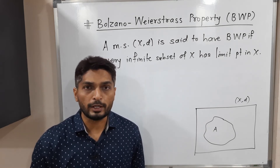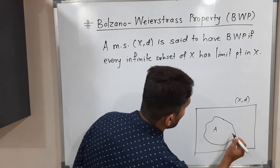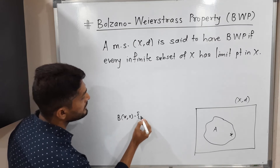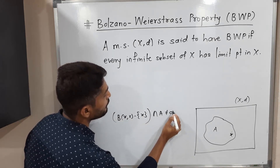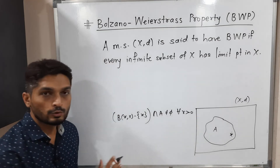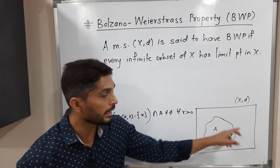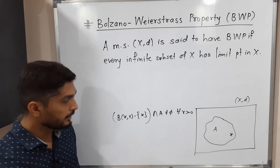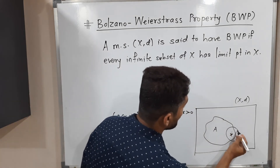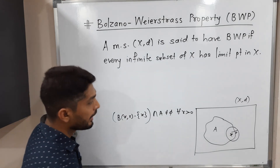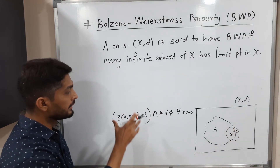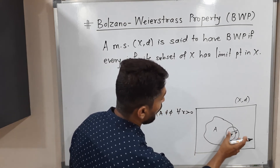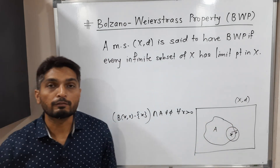So what is the definition of a limit point? Let us recall: X is said to be a limit point of A if B(x, r) minus the singleton {x}, intersected with A, is not equal to the empty set, and this is true for every r greater than 0. That means if you draw any ball around that point and remove the center of that ball, that set intersects A — the intersection of that part of the ball with A should be non-empty. Then we say it is a limit point.